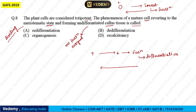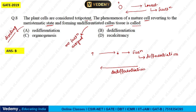इसमें बोला जा रहा है कि पूरा उल्टा चल रहा है — यानि जो functionality थी, वो वापस से revert back होकर dividing phase ले रहा है और undifferentiated callous में बदल जा रहा है। तो इस process को हम de-differentiation कहेंगे। जैसे activation का उल्टा de-activation होता है, वैसे ही differentiation का उल्टा de-differentiation होता है। जब एक plant cell अपने undifferentiated state में आकर meristematic activity और dividing activity show करता है, तो उस process को de-differentiation कहते हैं। Answer will be second. Re-differentiation तब होता है जब de-differentiate होकर वापस से अपनी functionality gain करे।